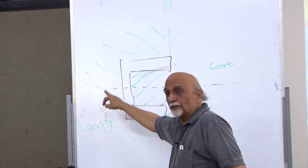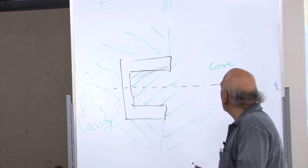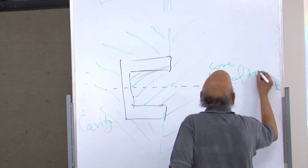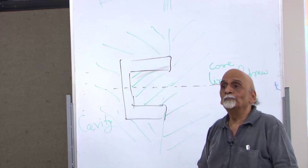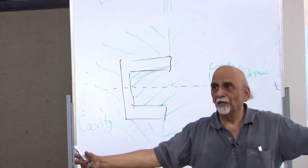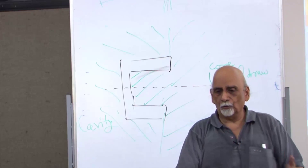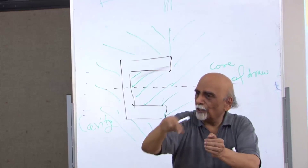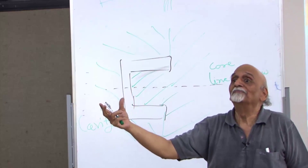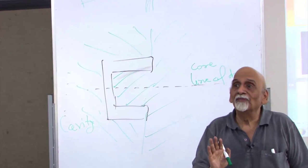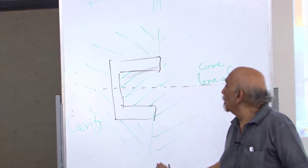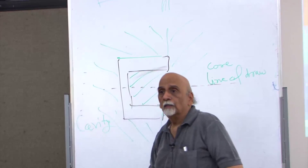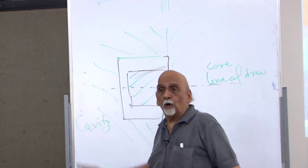They open on this axis, and this is called the line of draw. The mold opens like this. This is the cavity, this is the plunger. When I close them, that internal empty space is your product. Now imagine that this part has walls almost parallel to the line of draw.